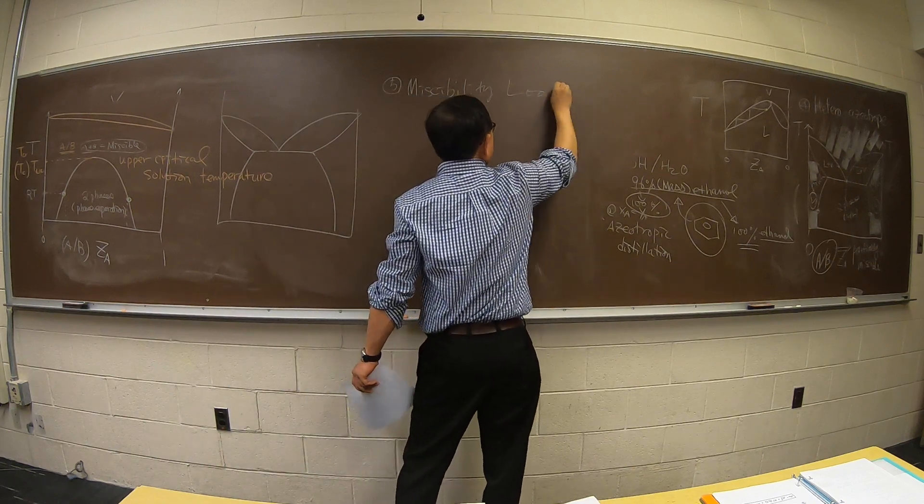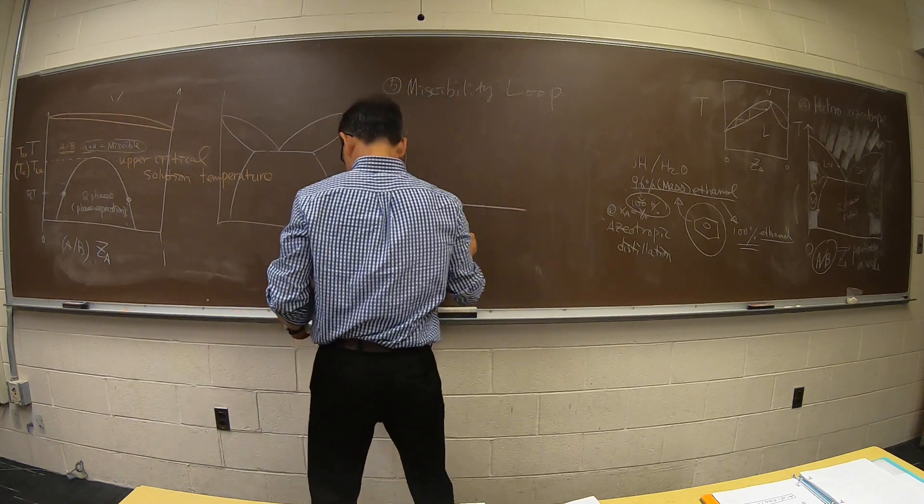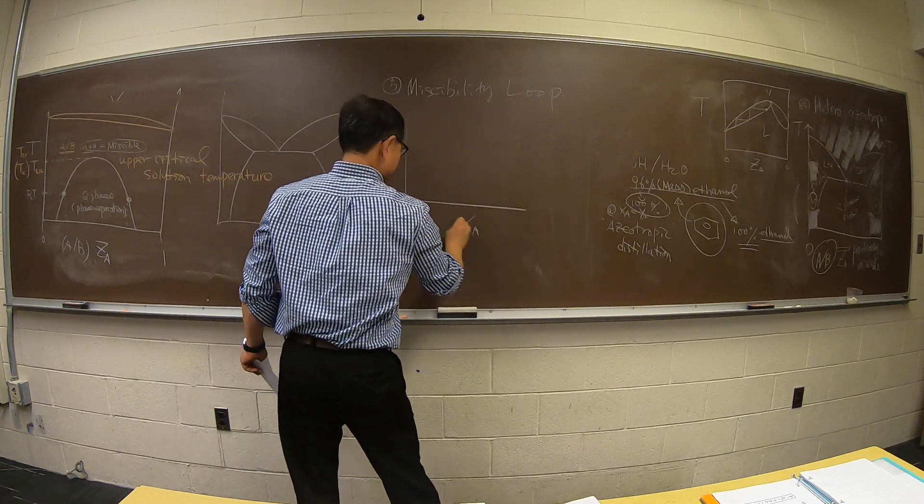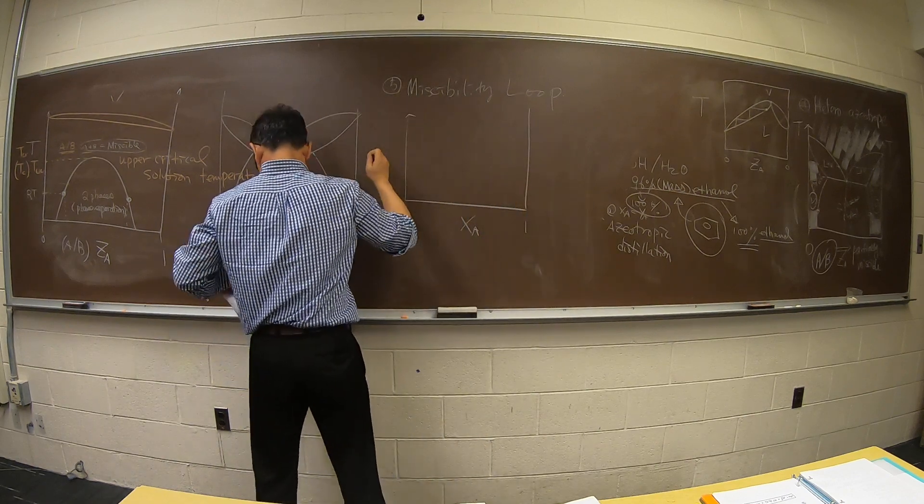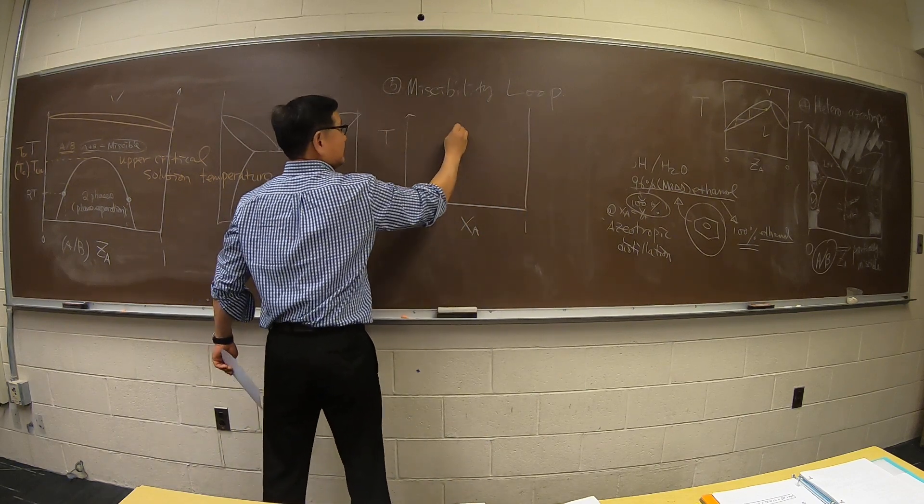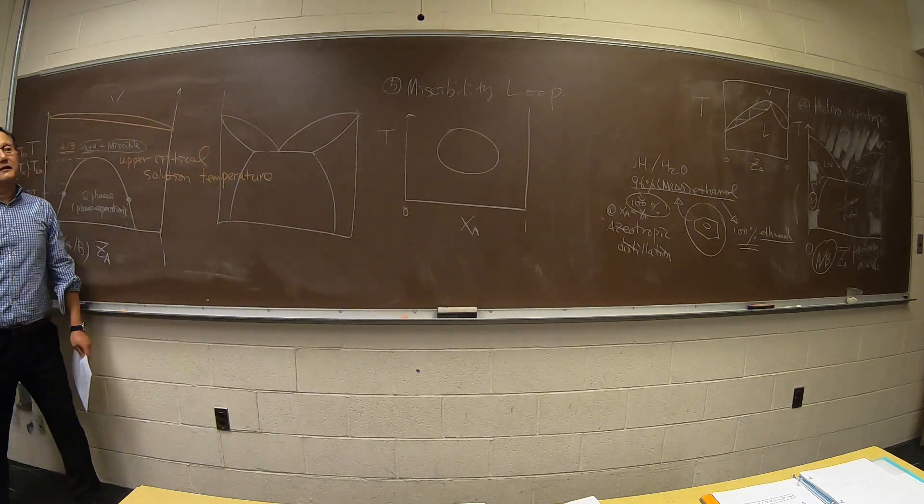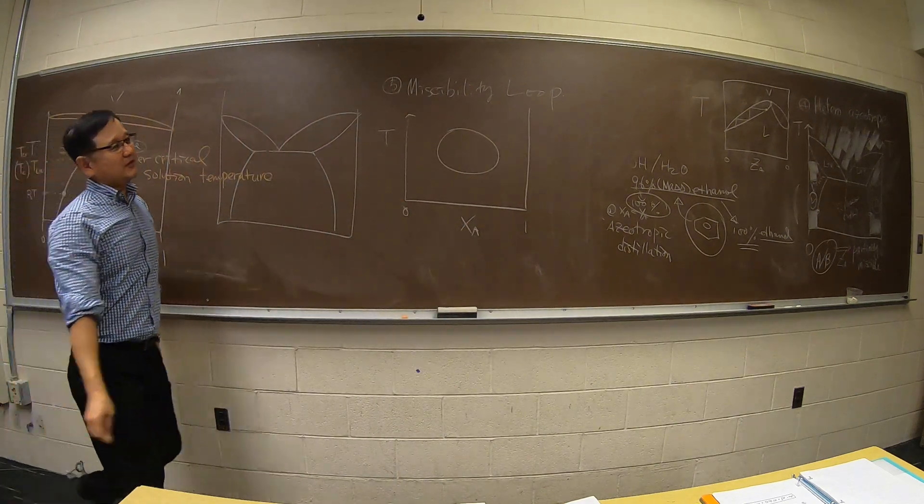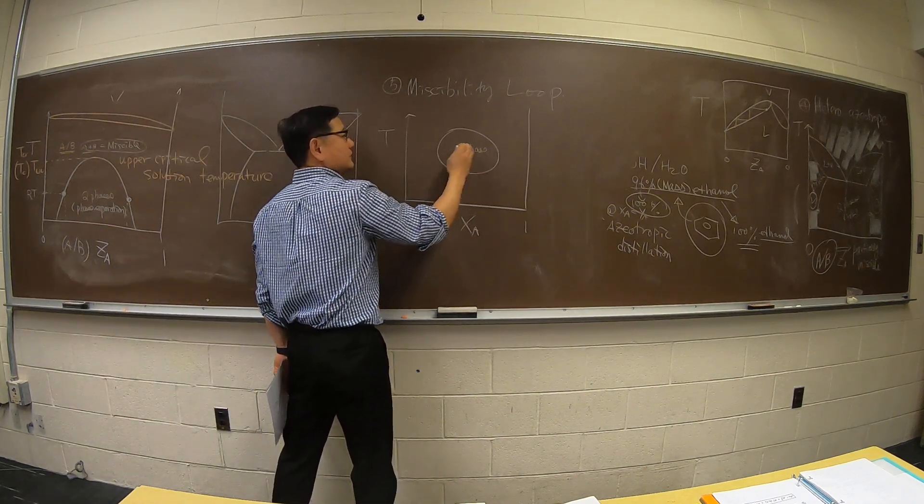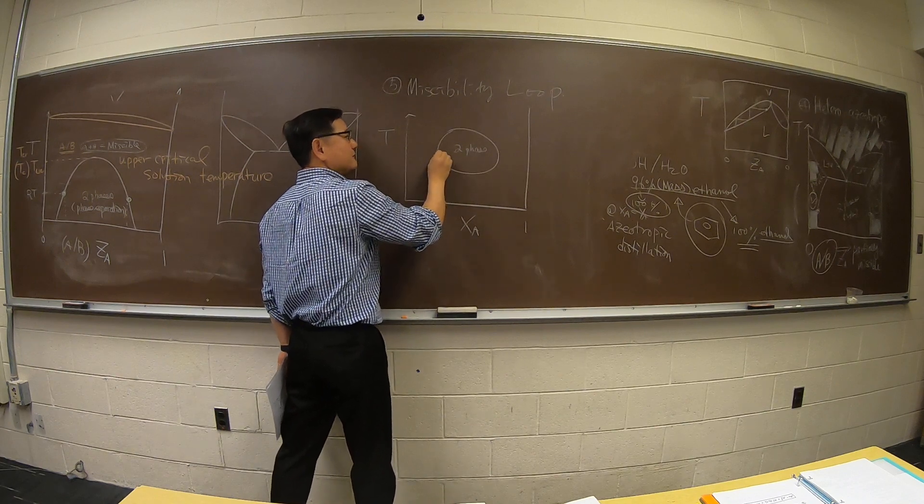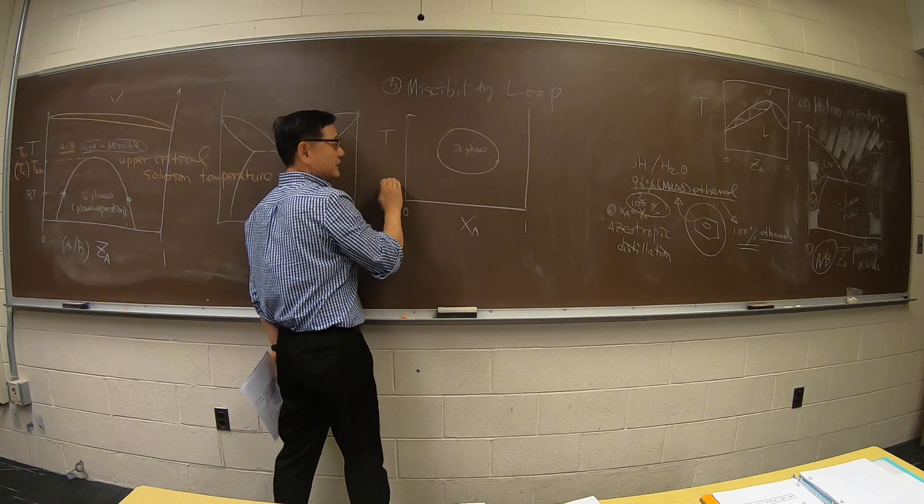It's just a language. So there are cases where XA is, there are cases like this. What do you think that I mean, this means two phases. Phase separation. So at this temperature you will have phase separation into these two points, right? But if you have lower temperature you will be miscible, at higher temperature you'll be miscible.